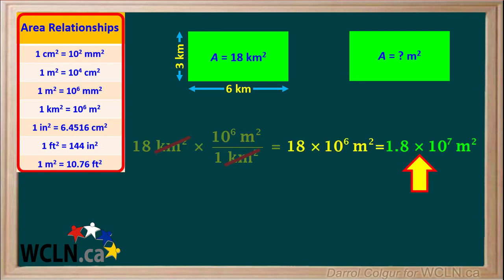And changing it to correct scientific notation gives us 1.8 times 10 to the 7th meters squared. So now we can state that the area of this piece of land is 1.8 times 10 to the 7th square meters. This is the same as 18 million square meters.